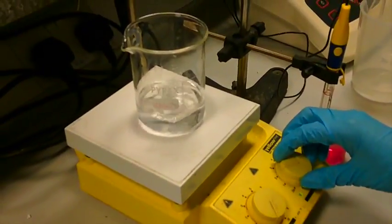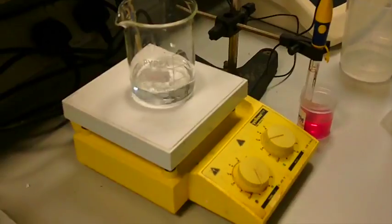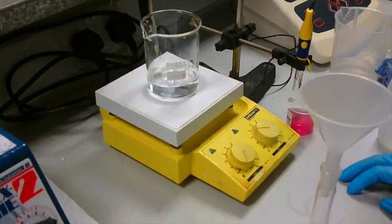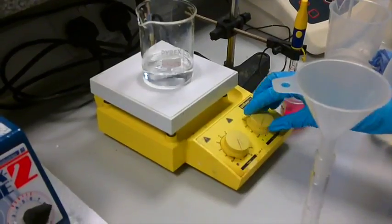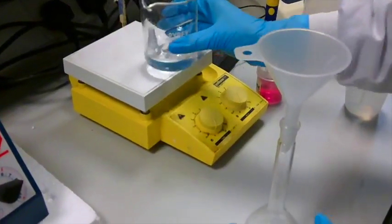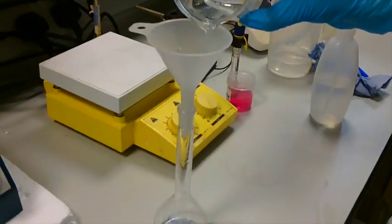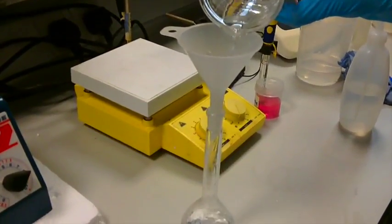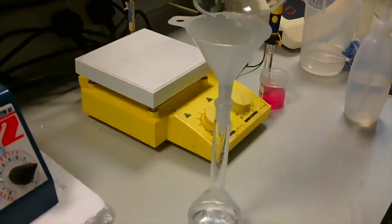After this has been homogenized, you can now pour it into a volumetric flask. Once the solution has been mixed, you can now transfer it to a volumetric flask using a funnel. Once you've added the solution, you can make it up to the mark with water.